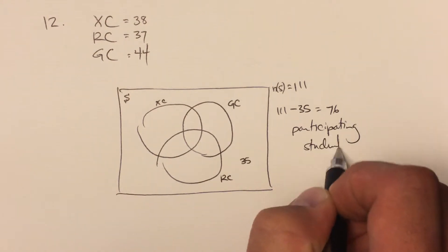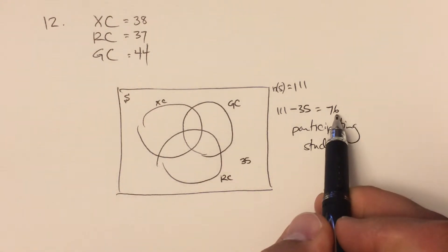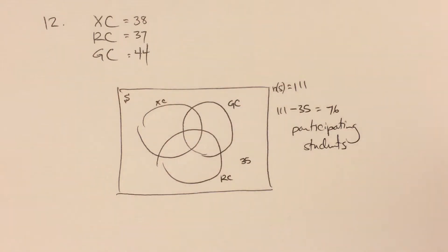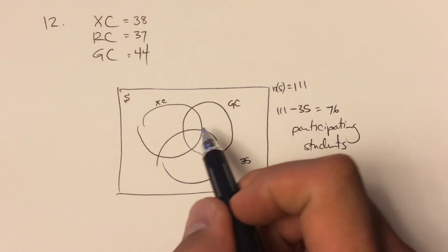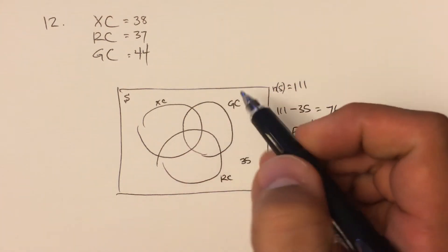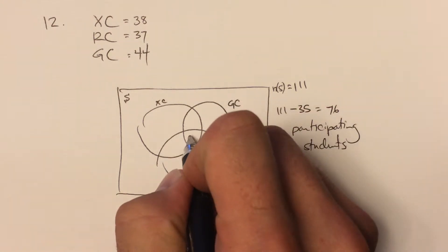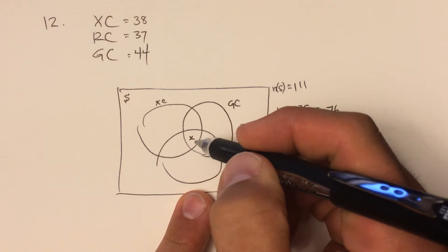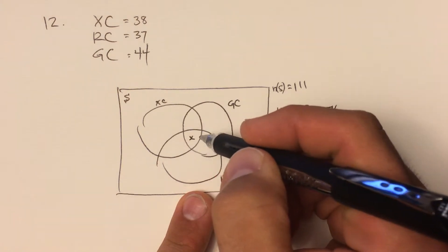That's how many students participate in extracurriculars. And you can see 76 is a lot less than the sum of these three numbers, so there has to be some overlap between these different groups. So let's look at what overlap we do know about. We don't know this value in here yet. I'm going to call it X. This is the value that we're looking for, how many students are participating in all three clubs.